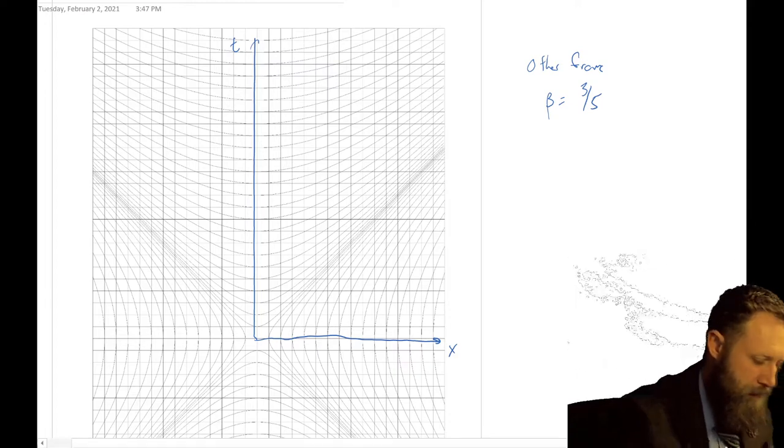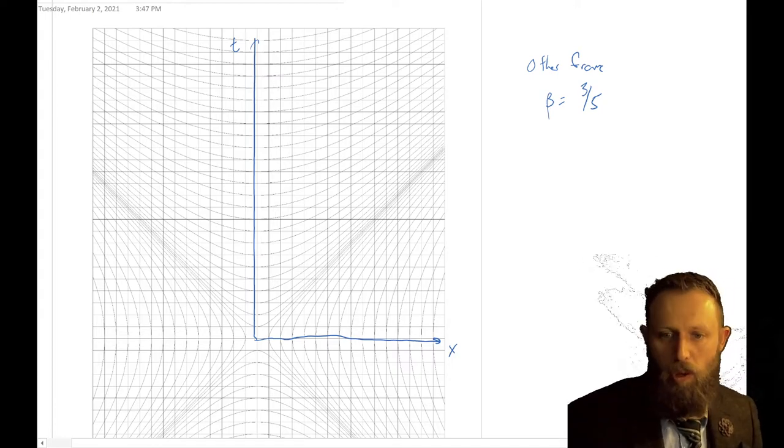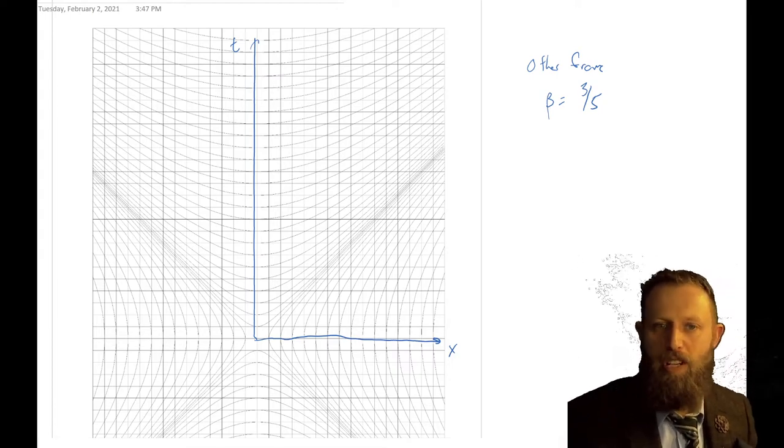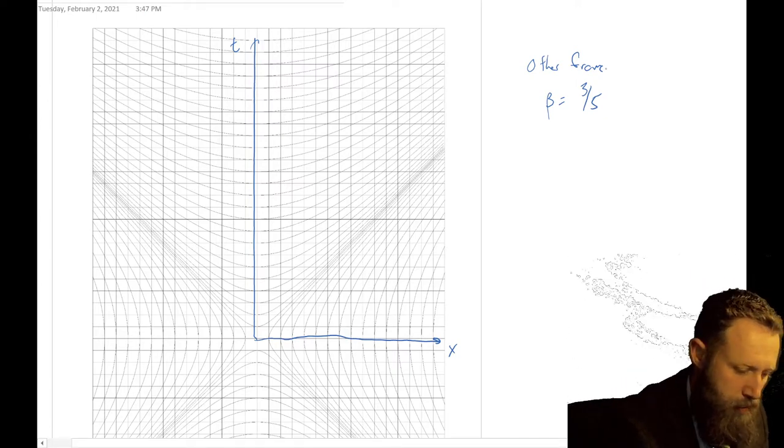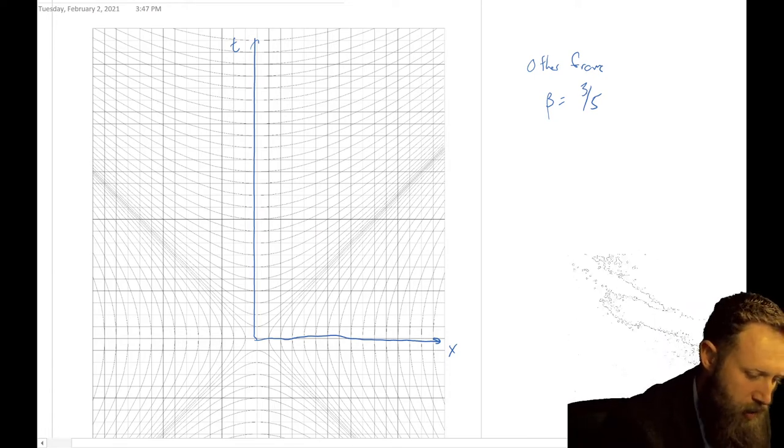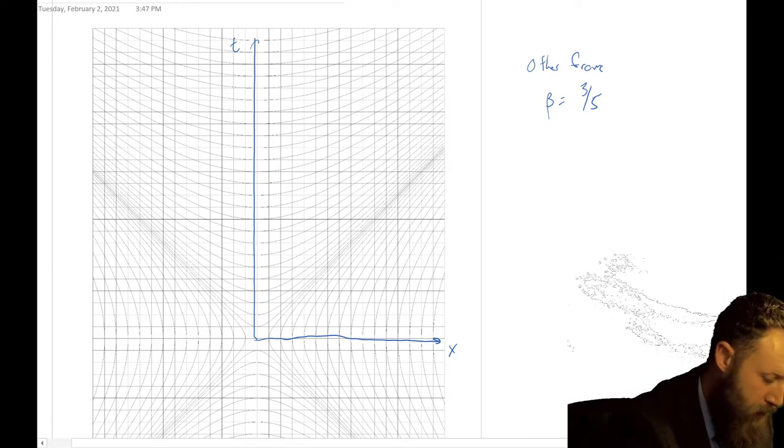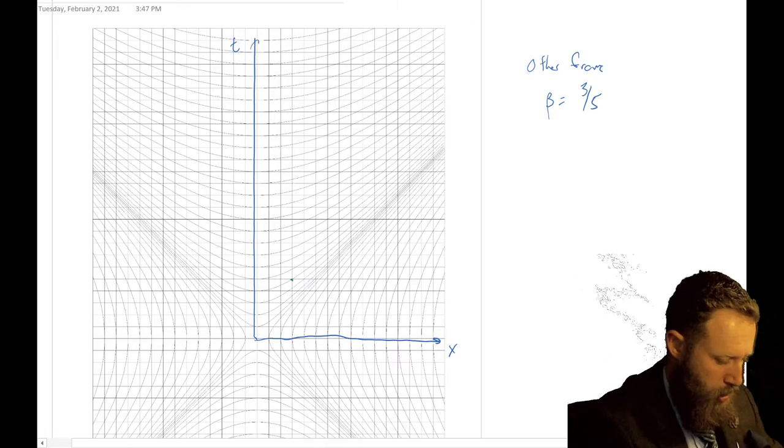We're going to basically draw the axis just like we do with world lines, and that's especially true with the t prime axis. For instance, if we want to draw the world line of this other frame, so let's say there's a clock in this other frame, we just want to have it have a slope of one over beta, or five-thirds. So if we count one, two, three, four, five, then over one, two, three. There's a slope of five-thirds.